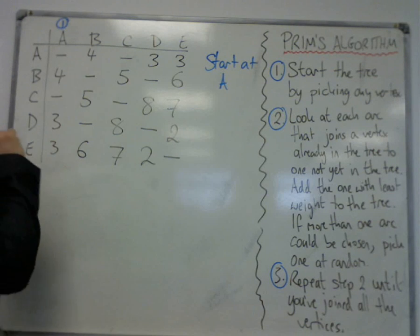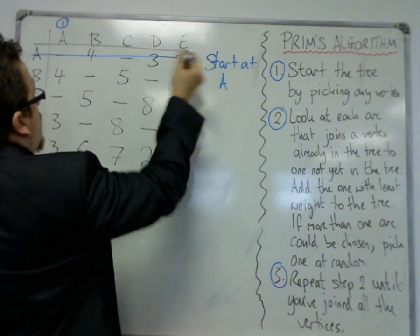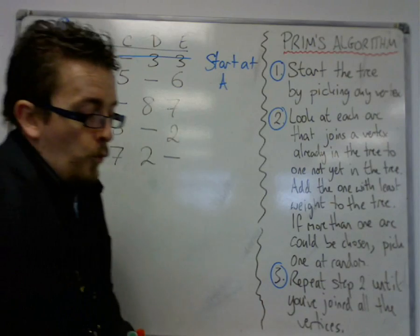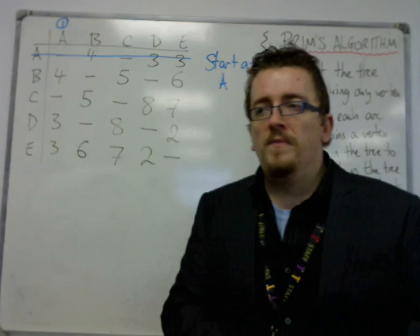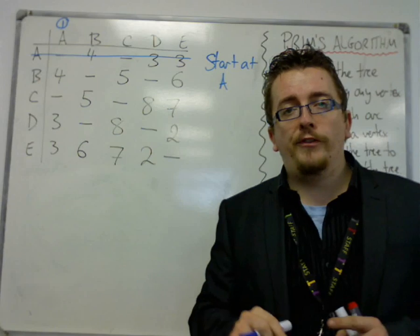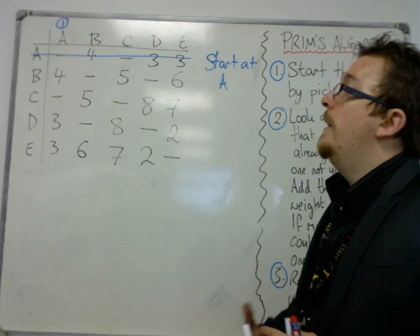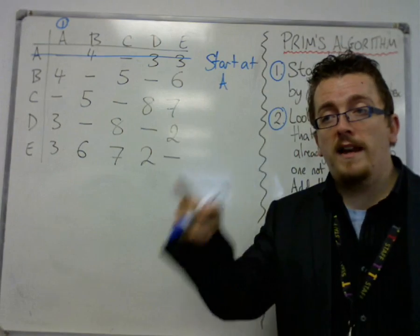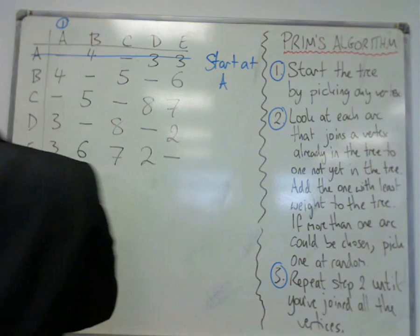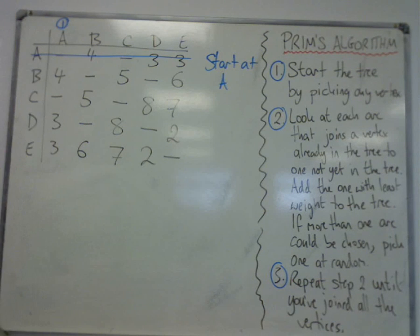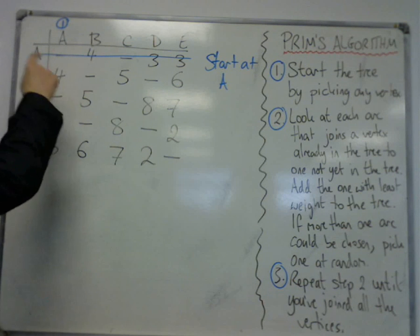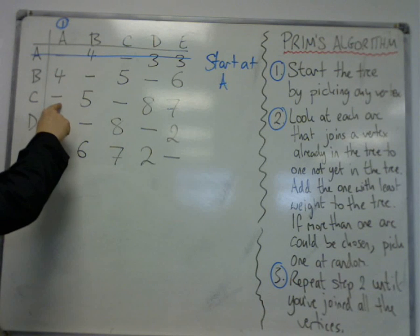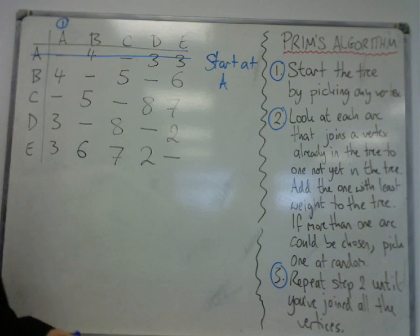Now, what we do then is we delete the rest of the row. And what that's going to do, each time we delete a row, is to make sure that we have no cycles. That is the purpose of doing this, is to make sure that we then don't choose an edge that will get us back to A to create a cycle. And you look down the column of A to pick the shortest edge. And we go: there's a 4. A is not connected to C, so that's not counted. And then A to D, A to E, they're both on 3. And we could pick either.